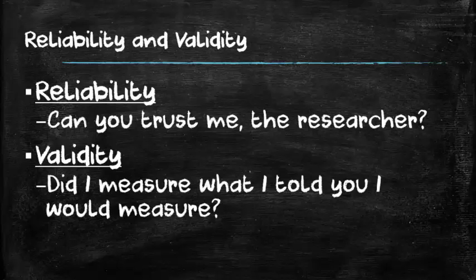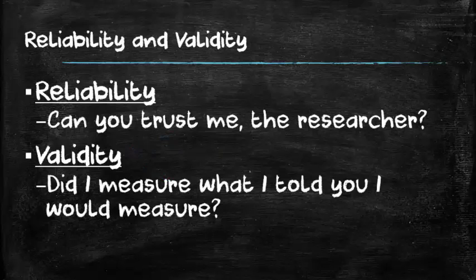The second construct is validity: did the researcher measure what they told you they would measure when they set out to do their research? In the field of sociology this is a really important concept. Sometimes you may start out a research project wanting to measure a specific thing, and as the research goes on month to month you might find that you haven't really done a good job of capturing a solid measurement. As you get more involved in doing or reading research, you'll become more comfortable assessing the validity of the research you're reading. Reliability and validity are really important concepts to understand.